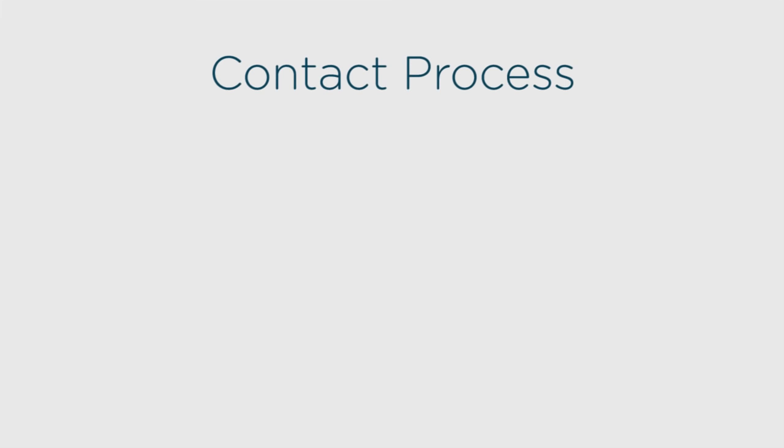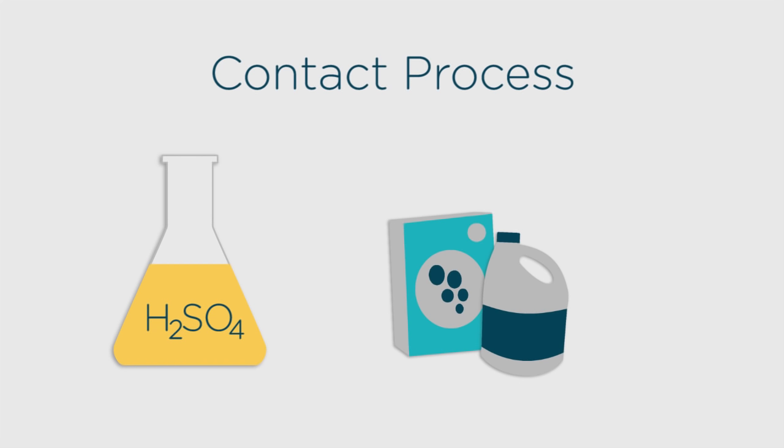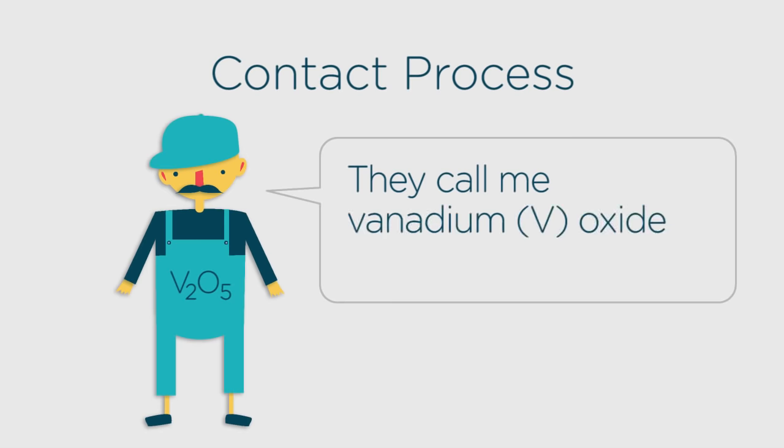And secondly, the contact process to manufacture sulfuric acid which is used to make detergents and fertilizers. Vanadium pentoxide, sometimes known as vanadium 5 oxide, is the catalyst in the contact process.